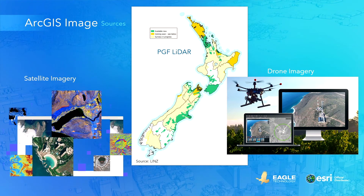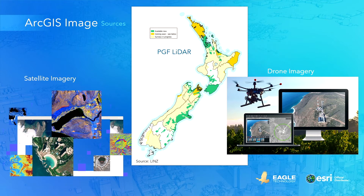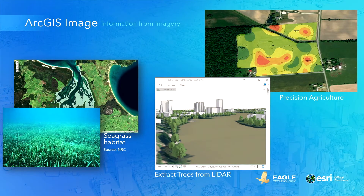Many new satellites are being launched into space that capture images using more bands, have a higher resolution and capture at a smaller time interval. And as we speak, a lot of new LIDAR data is being captured in New Zealand that needs to be managed and put to use. Drones are also being used across many sectors to capture frequent and high resolution imagery, often using more than just the RGB bands. This all comes with the challenge of how to manage and disseminate all this data, but also with many new opportunities to turn raw data into new information to better understand the world we live in.